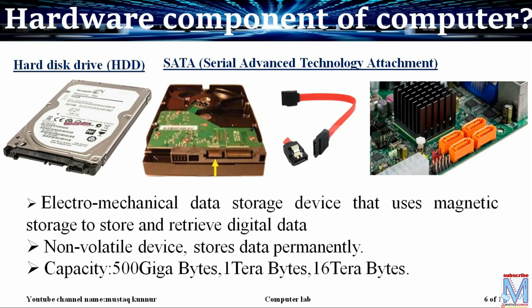Hard disk is an electromechanical storage device. It usually has a larger capacity compared to RAM. Whatever data, operating system, and application programs are to be stored, they are stored in the hard disk. Hard disk is a non-volatile device — here data is stored permanently as long as you do not delete it. In the figure we can see that the hard disk can be connected to the motherboard with the help of a SATA cable, that is serial advanced technology attachment cable.